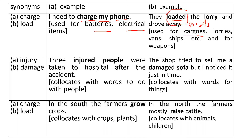For example, 'three injured people were taken to hospital after the accident.' Injured collocates with people. But 'the shop tried to sell me a damaged silver' — silver is an object, so we use damaged.